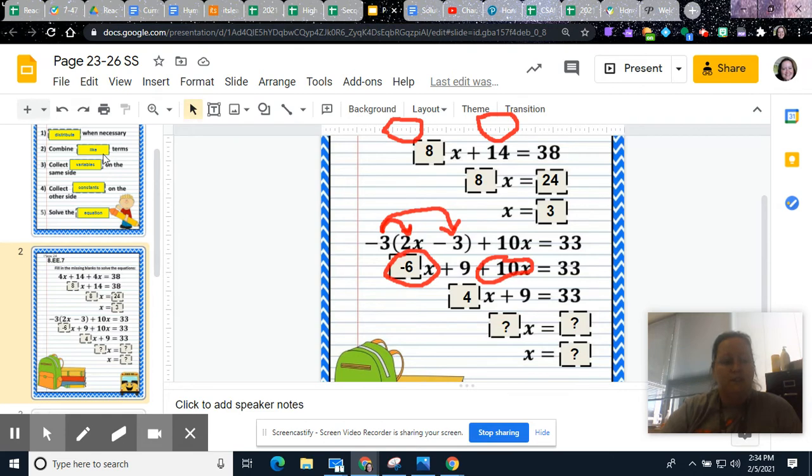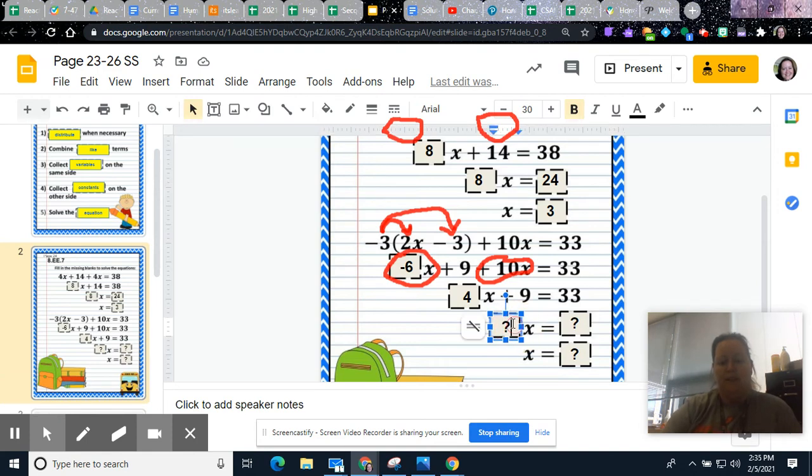Now you can start to collect the variables on the same side. Well, this one only has variables on the left, so that one's done. And then it says collect constants on the other side. So we are going to move these 9 coins or this plus 9 to the other side. So you will do that by subtracting. So when you take 9 minus 9, it all goes away. 33 minus 9 equals 24.